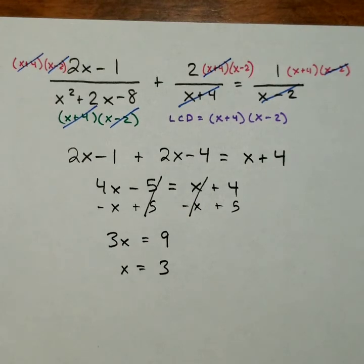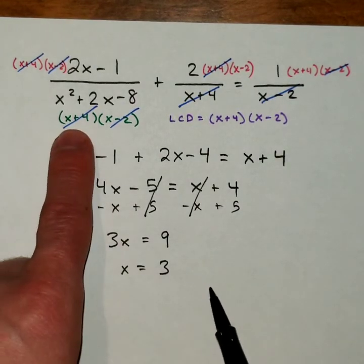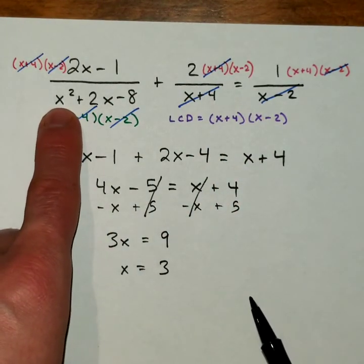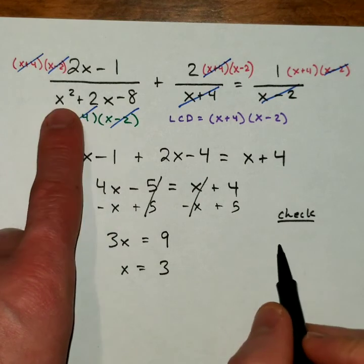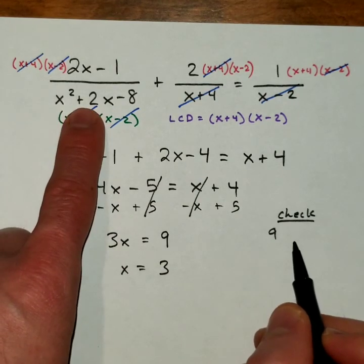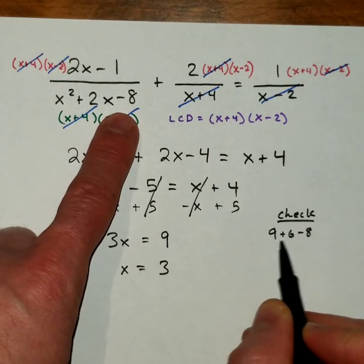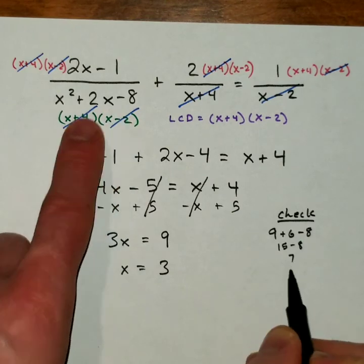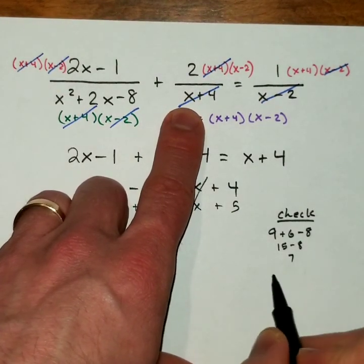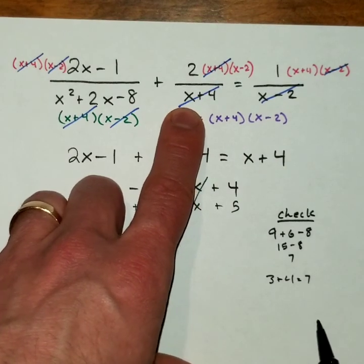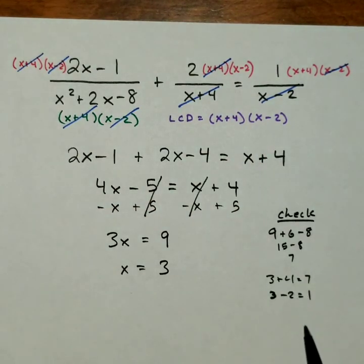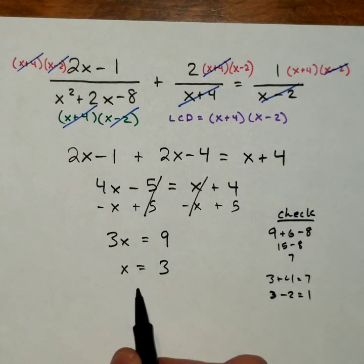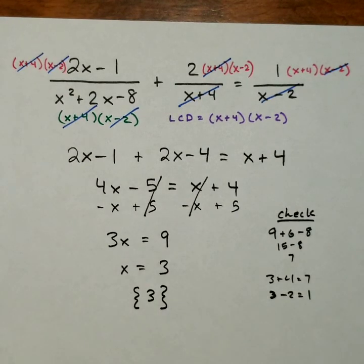So that takes care of the simplify and solve steps. Now to check my answer, I just take this 3 and plug it in to each of the 3 denominators. In the first denominator, 3 squared, maybe I'll do the check over here on the side. I'm just checking the denominator. So 3 squared is 9, 2 times 3 is 6, minus 8. 9 plus 6 is 15, minus 8 is 7. So that's not a zero, so we're good there. Here I get a 3 plus 4, which is 7 also, so that's okay. And here I get a 3 minus 2, which is 1. As long as none of those denominators become zero, we're okay. So 3 is a solution. I'm going to put that in the solution set, and we're all done with that problem.